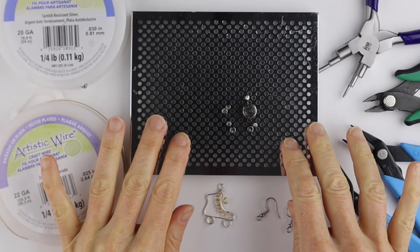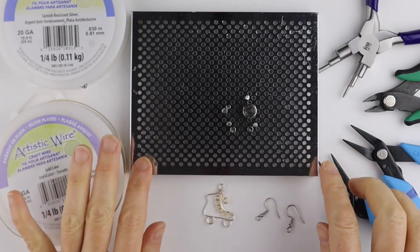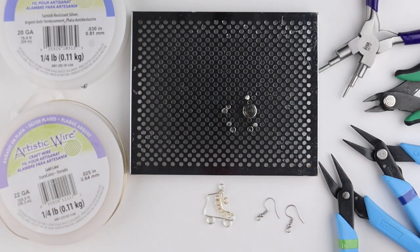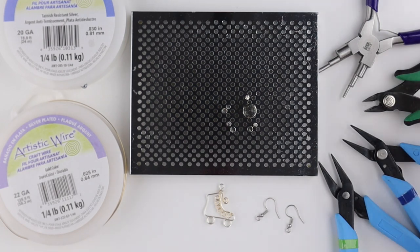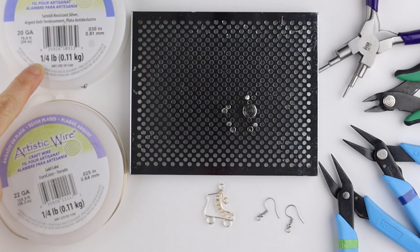to go on the Artistic Wire Deluxe Jig Kit. You're also going to need your pliers: round nose, flat nose pliers, cutters, and my looping pliers. I'm using 20 gauge wire for the base and 22 gauge wire for the laces, and if you're making earrings you need some hooks.